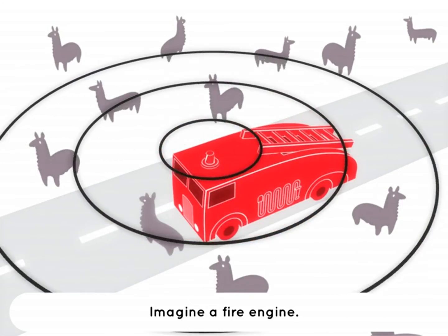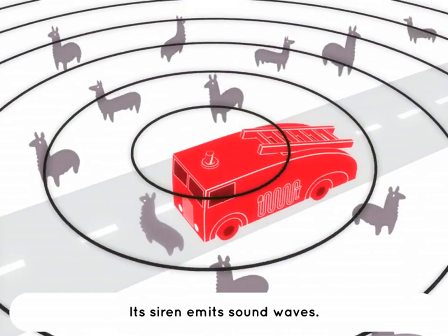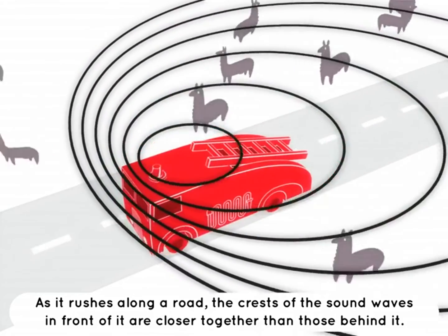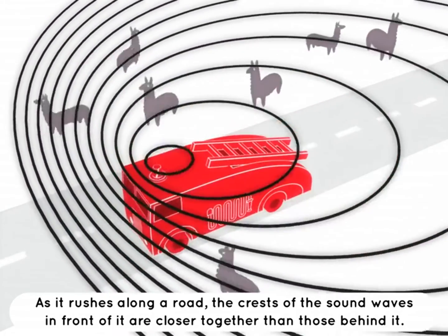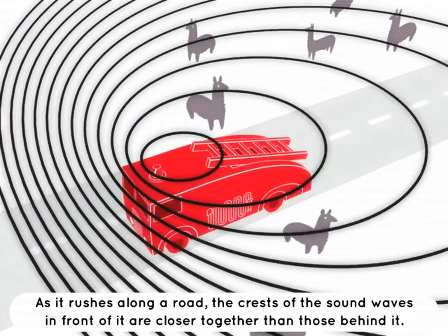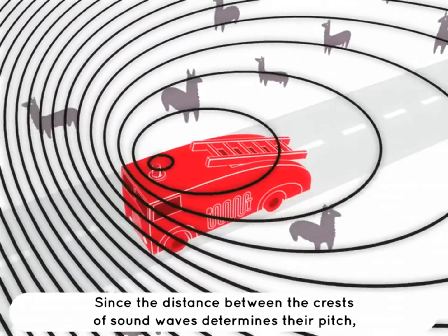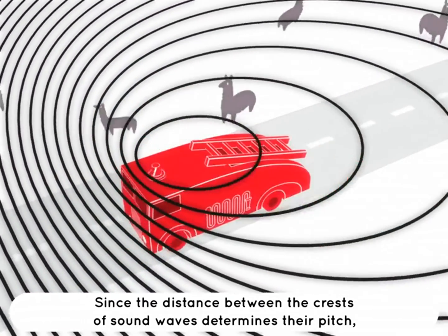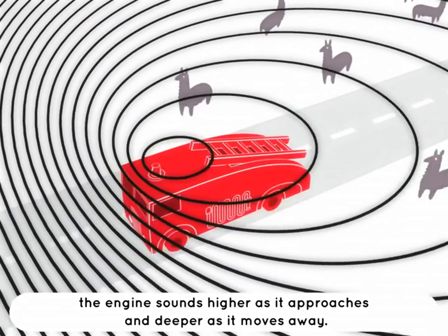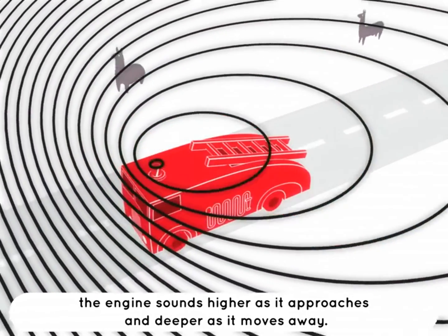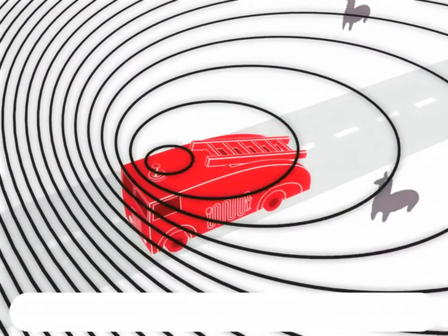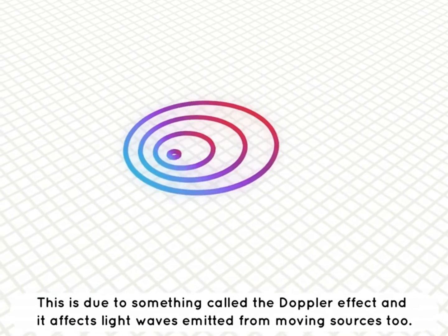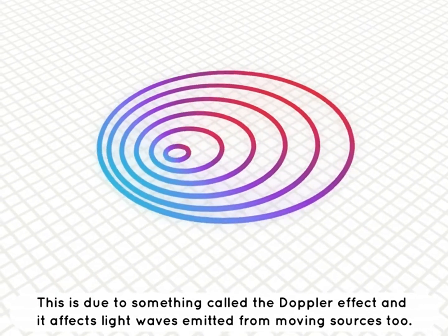Imagine a fire engine. Its siren emits sound waves. As it rushes along the road, the crests of the sound waves in front of it are closer together than those behind it. Since the distance between the crests of sound waves determines pitch, the engine sounds higher as it approaches and deeper as it moves away. This is due to something called the Doppler effect, and it affects light waves emitted from moving sources too.